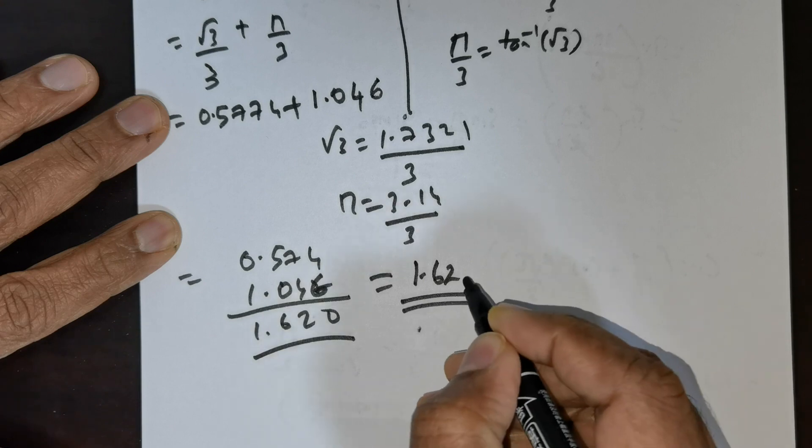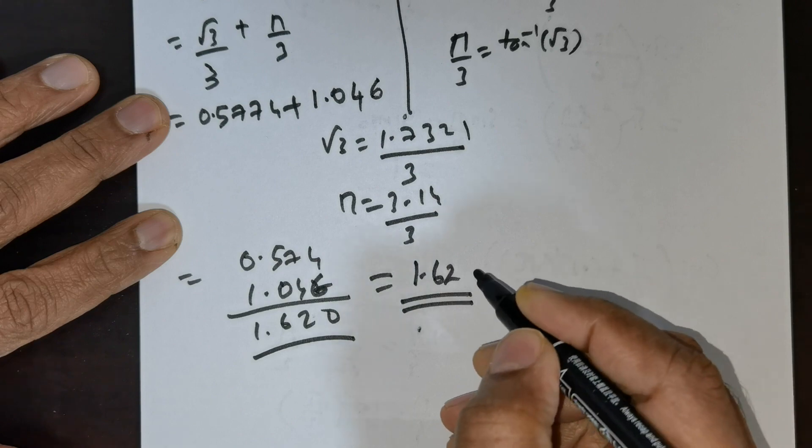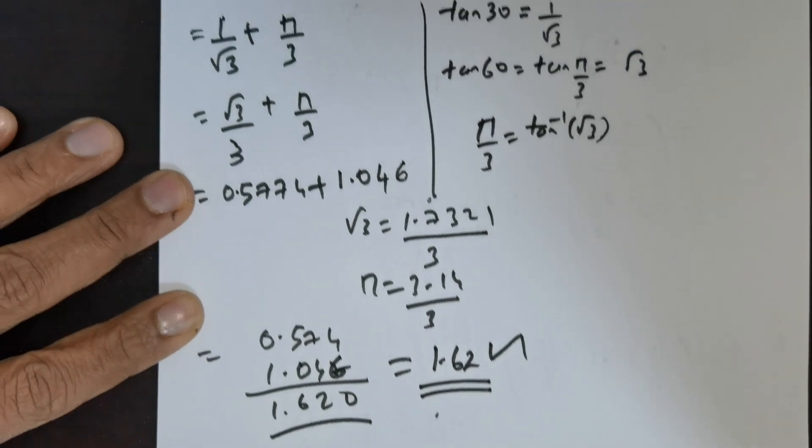So this would be the value, or you can just put 1.62. So if any value greater than this, that shouldn't be a choice. This should be the choice for this particular question.